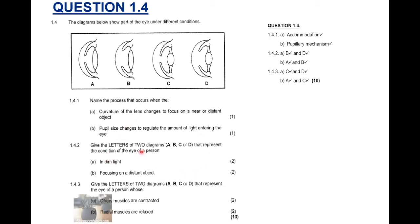Now, 1.4.2: Give the letters of the two diagrams that represent the condition of the eye of a person. So, they want letters only of two diagrams. So, if you look and see, each is two marks, so you need to have two letters. In dim light. Dim light, we know the pupil will be more dilated. So, this whole area that I'm pointing to with the laser, that's the pupil. So, in dim light, the pupil dilates to allow more light in. So, that answer will be B and D. Focus is on a distant object. We know focusing during a distant object. It's very easy to see. The lens will be less convex. So, less convex, or easier terms, flatter lens. That's a distant object. So, your answer will be A and B.